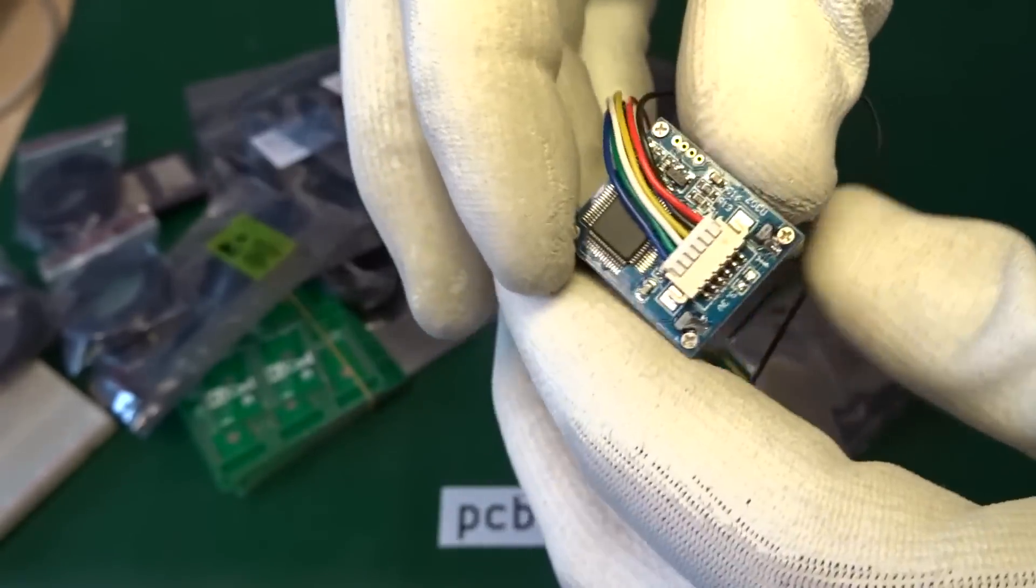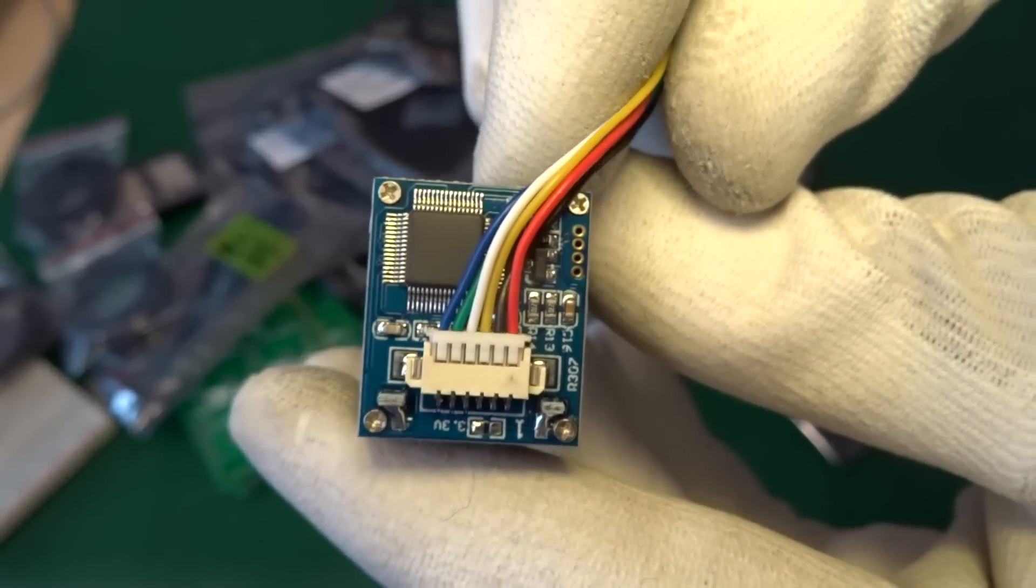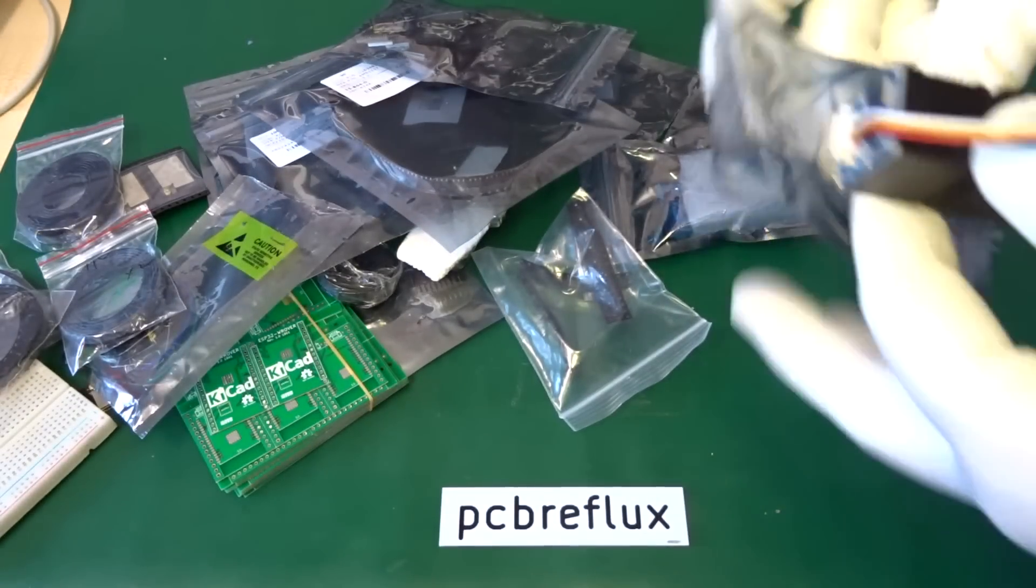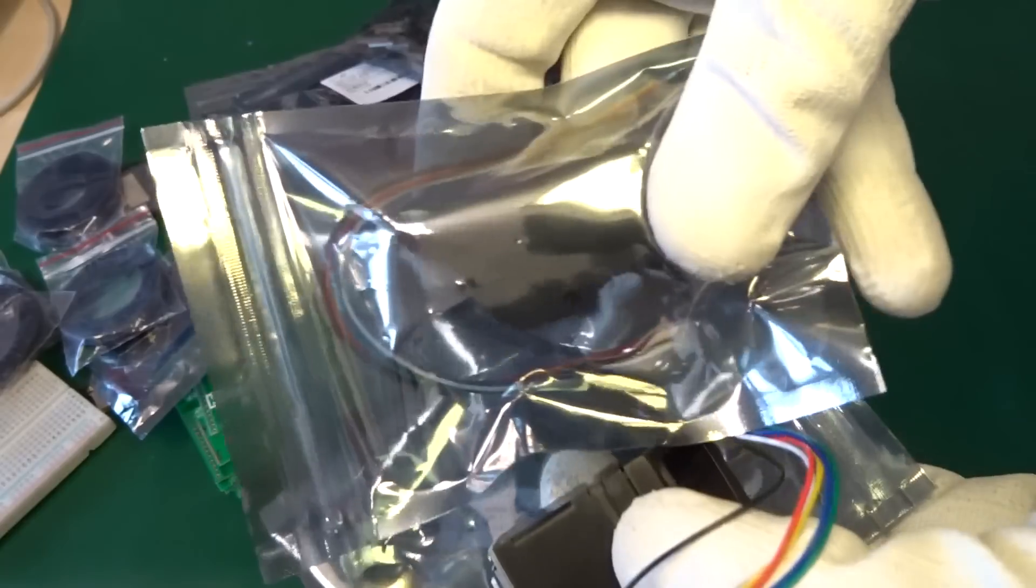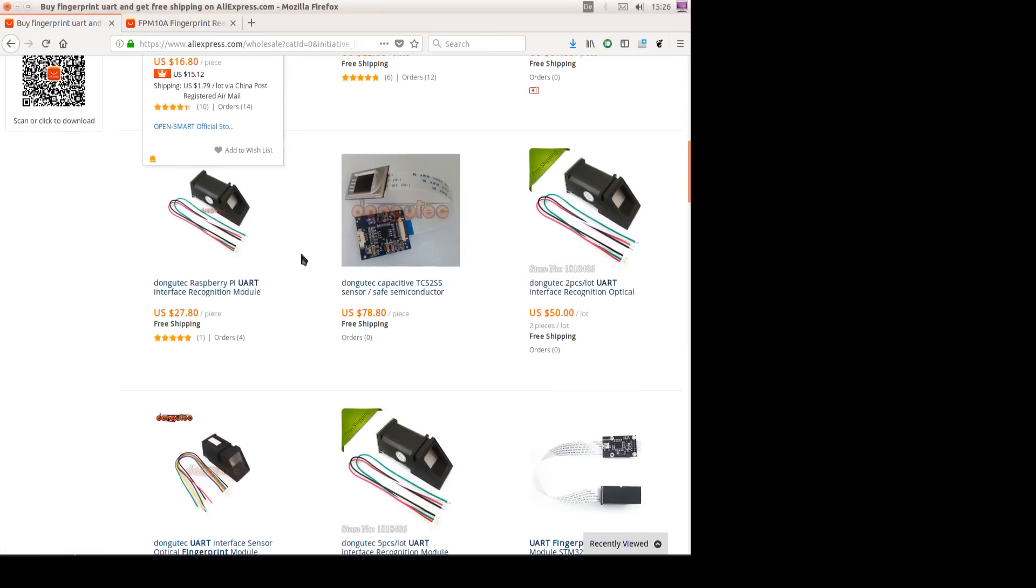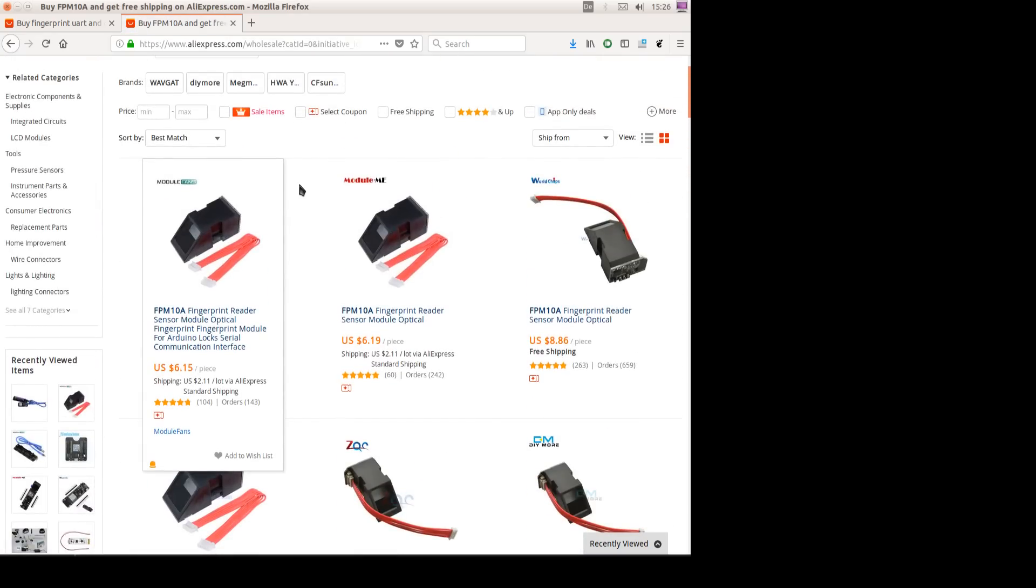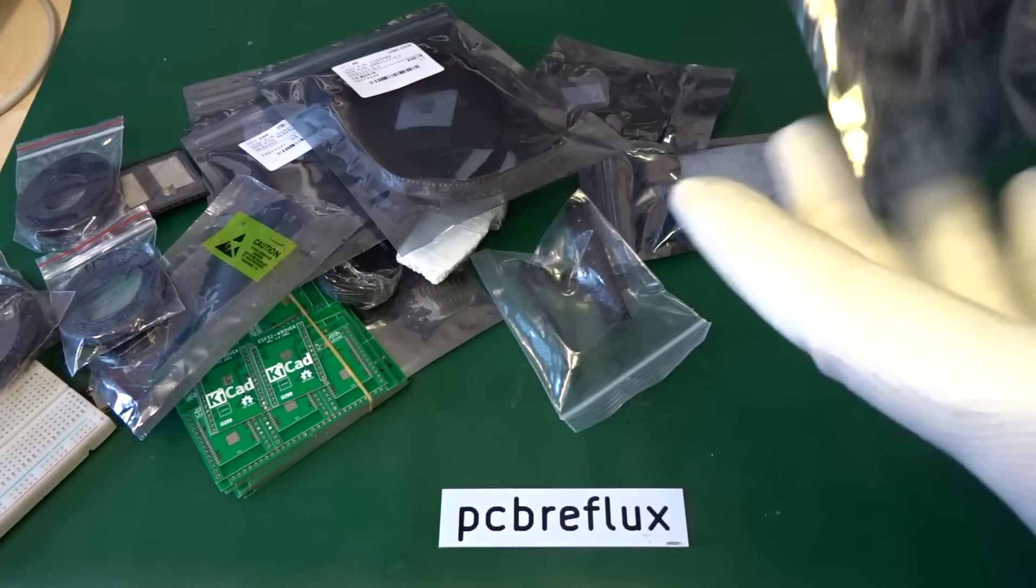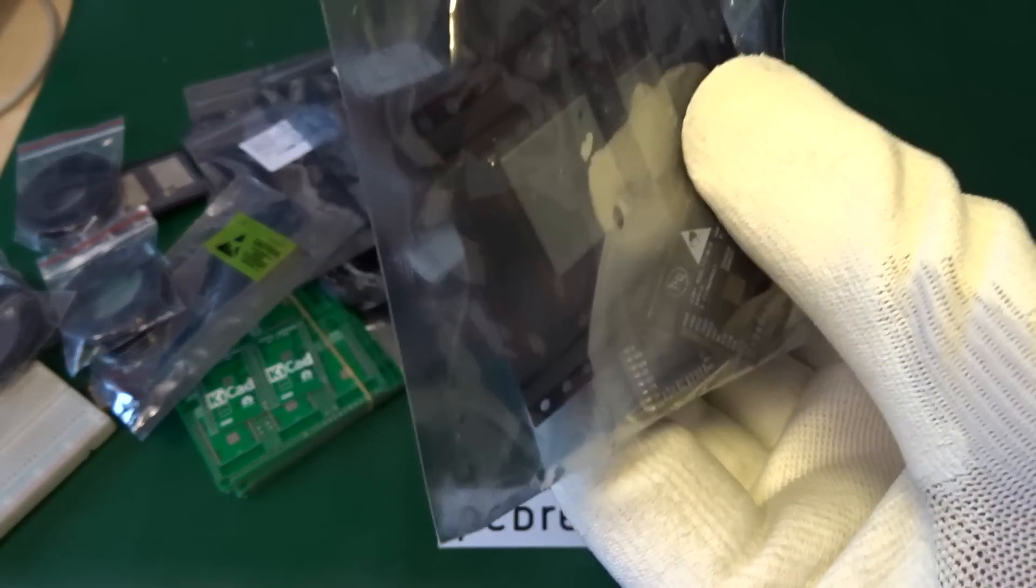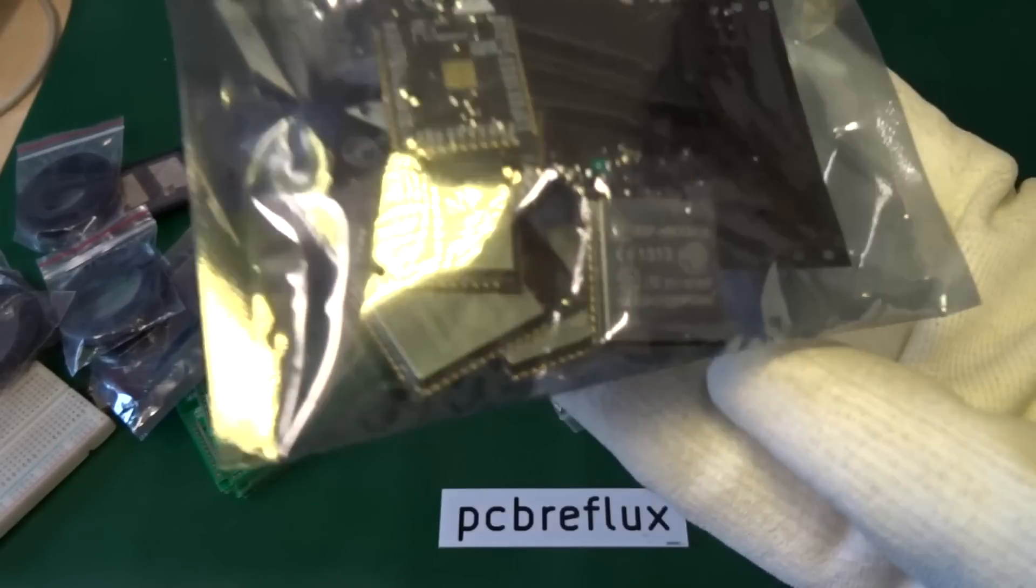Also some kind of power management for the fingerprint sensor, so you don't have to switch on the whole time the fingerprint sensor. You have some sensing line for this. Next, I also ordered a bunch of ESP32 Vroom modules, but this is not very new—this is what I usually do when I run out of modules.